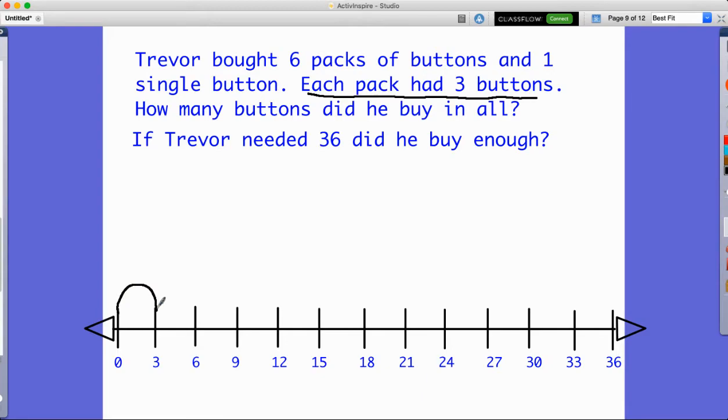So that would be one pack, two packs, three packs, four, five packs, six packs. You have six packs of buttons. And then it says here that he bought one extra. So that would be right here. That would be 19. I'm just going to do a plus one here too, plus one button. So I can remember.